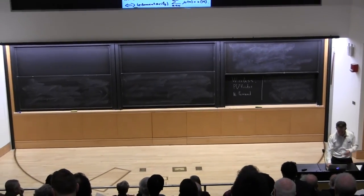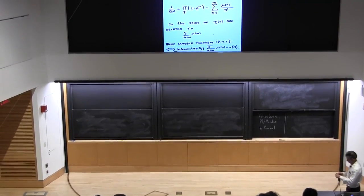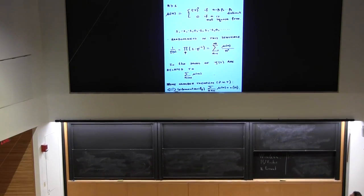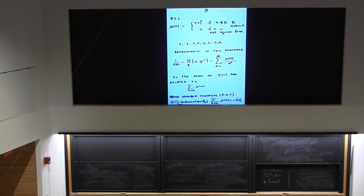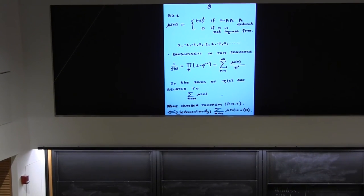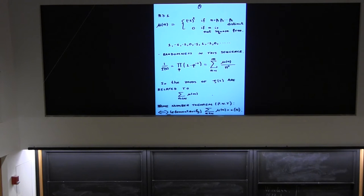So let me explain the topic. It's all just about the Möbius function, which is minus one to the number of prime factors if n is a product of distinct primes, and zero if n is not square-free. Mu of n is a long-studied function and we still really don't understand that much about it. This lecture is about how random is this sequence of numbers — ones, minus ones, and zeros.